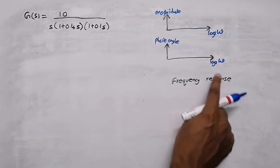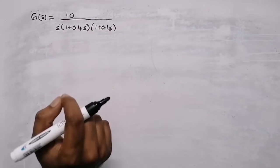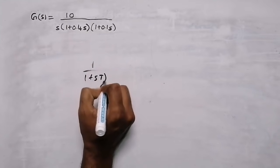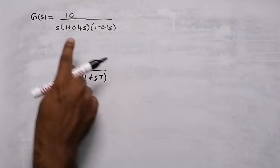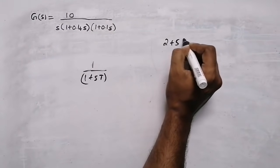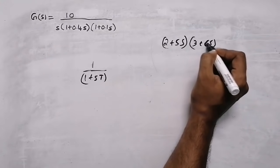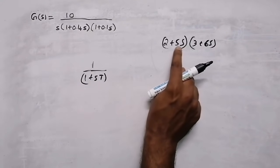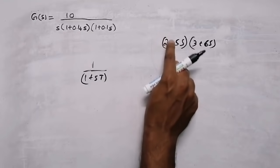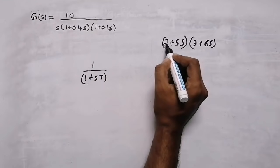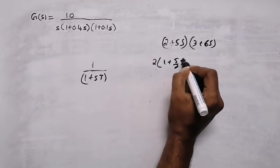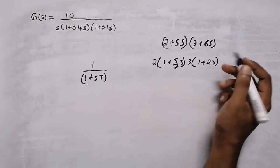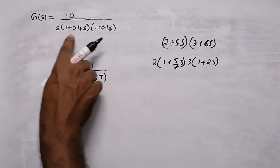When you get a question, first check whether it is in standard time constant form — that is, 1 plus sT. For example, if the question has terms like (2 + 5s) and (3 + 6s), it is not in standard form. You need to convert it: take 2 outside to get (1 + 5/2 · s), and take 3 outside to get (1 + 2s). In this question it is already in standard form, so we don't need to do anything.